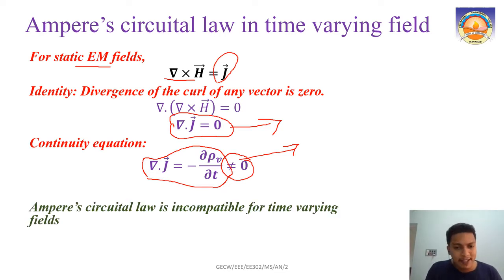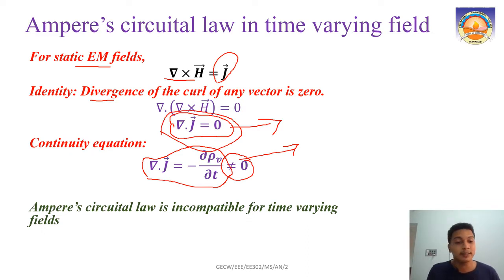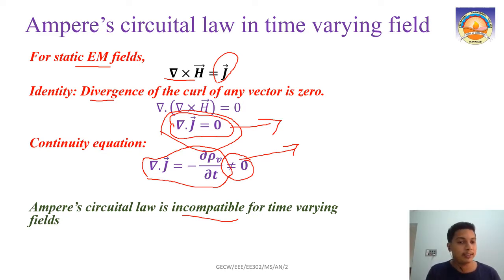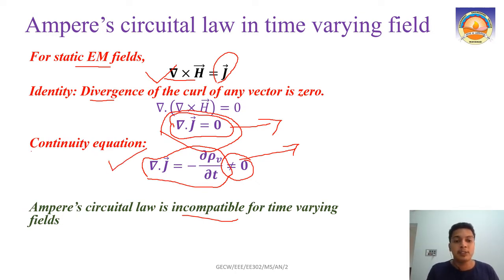From applying the divergence to the curl equation, we get that del dot J is zero as per Ampere's circuit law in static conditions. But the continuity equation tells us it is not zero. So we can state that Ampere's circuit law is incompatible with the time-varying field — it is true for static magnetic fields, but not true for time-varying magnetic fields.